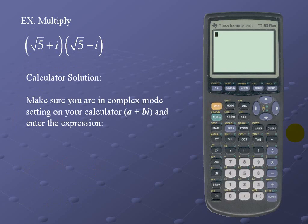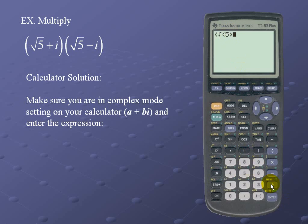Let's look at the calculator solution. Since we already have the right mode settings, we'll simply enter the expression: a beginning parenthesis, then the square root — notice you're given a beginning parenthesis for your square root — enter the radicand and close off the radical, then plus i. Then the square root of 5 minus i. Be sure to close off your parentheses. We get a result of 6.